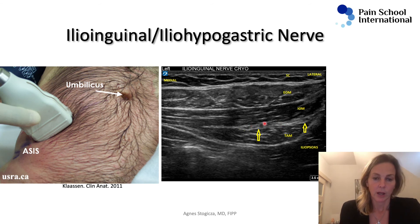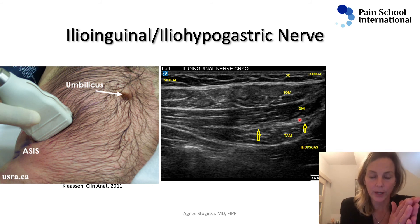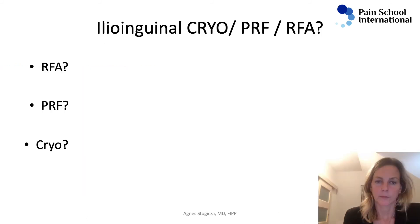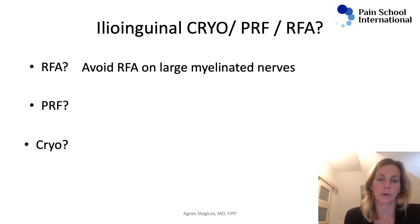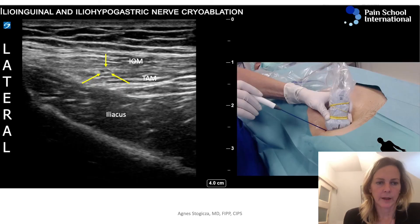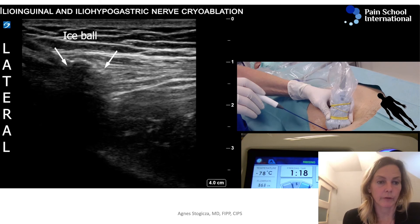Here you can see the well-known ultrasound image between the internal oblique and transverse abdominis — you can identify the ilio-inguinal and ilio-hypogastric nerves. This is just one section where they sit exactly between these muscles; they actually pierce through the abdominal muscles and surface towards the ASIS. Shall we do cryo, pulse radiofrequency, or RFA? RFA can lead to neuroma formation so you want to avoid it for injured nerves. PRF we can try, but the expected benefit is short-lived. And then you can do cryo with the expected benefit of six months. You can identify the ilio-inguinal nerve between the appropriate muscle layers and visualize the ice ball as it comes from lateral to medial — more often I come from medial to lateral.